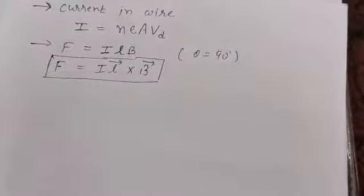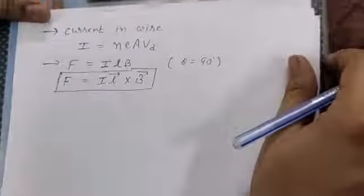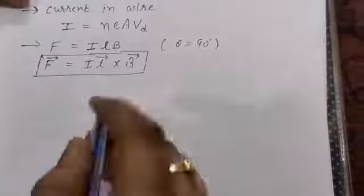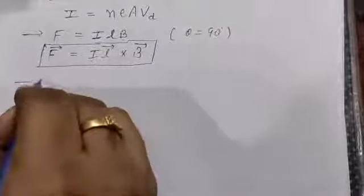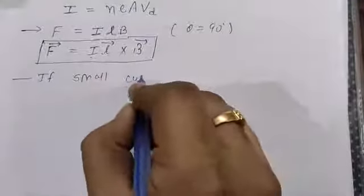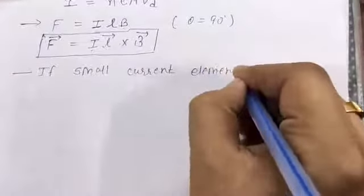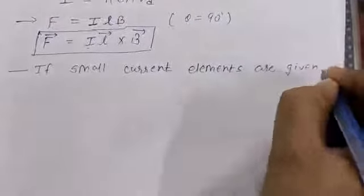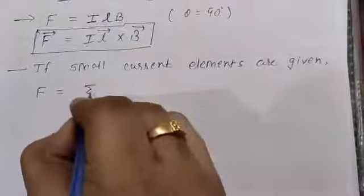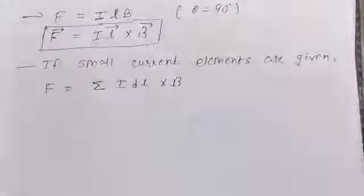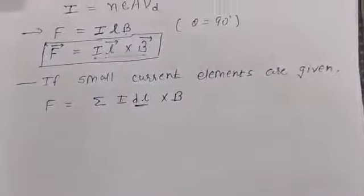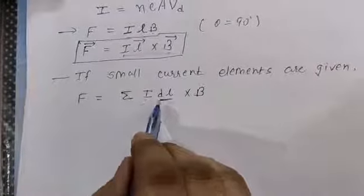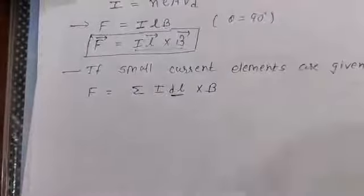If we are given small elements of current and want to find out the total magnetic force, then we will integrate this formula I·dL cross B, or we will add all the small forces. So if small current elements are given, then total magnetic force F is the summation of I·dL cross B. If the whole element is given, the proper formula is I·L cross B.